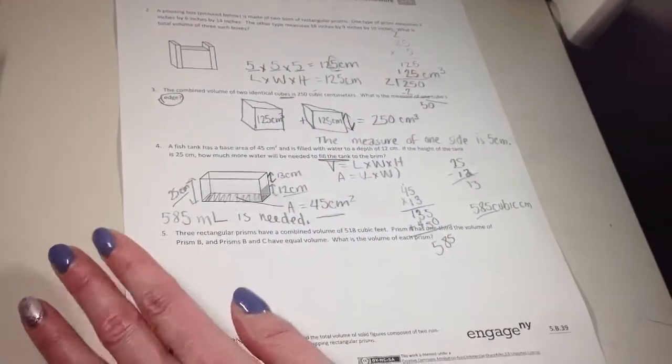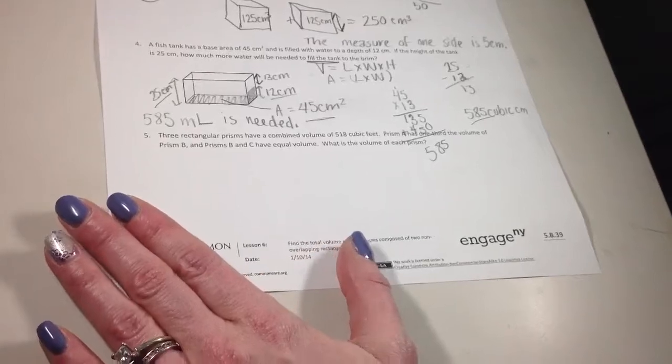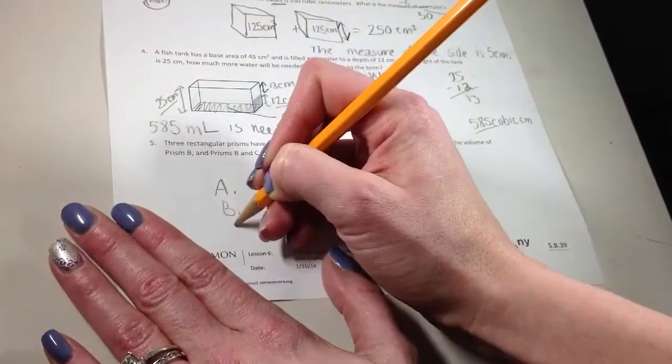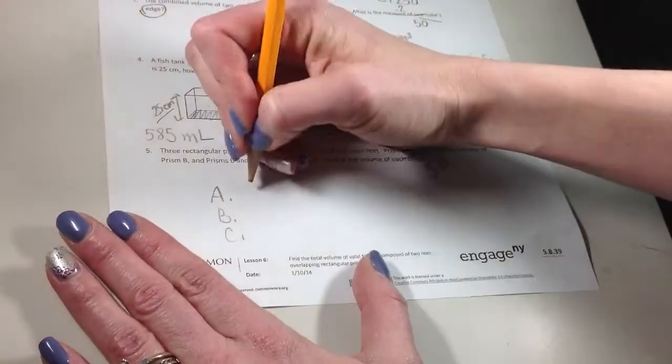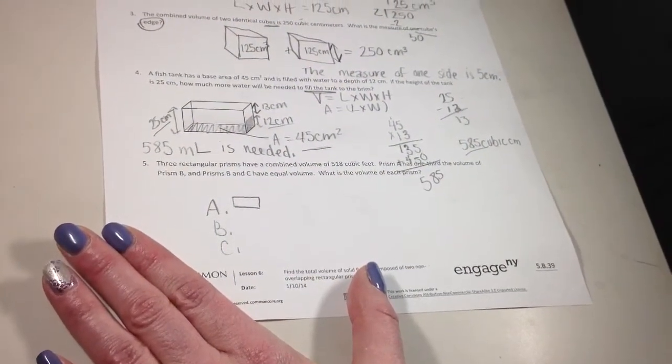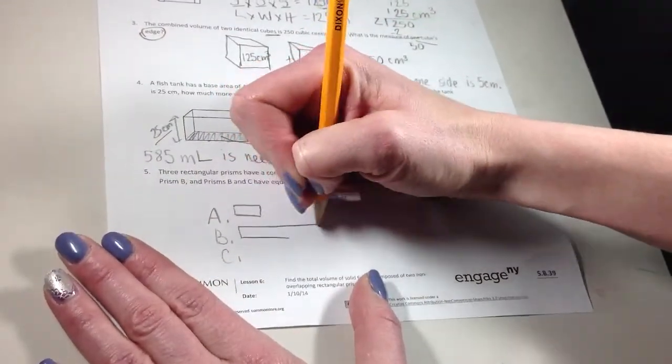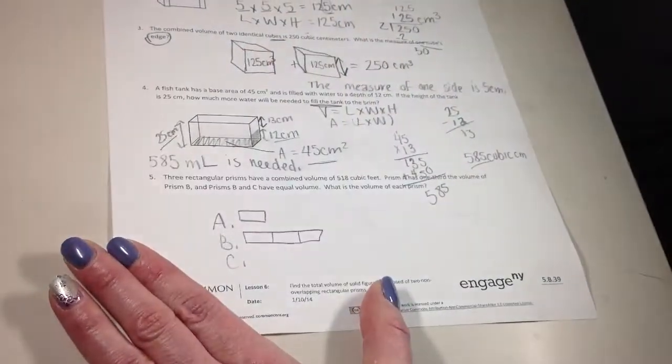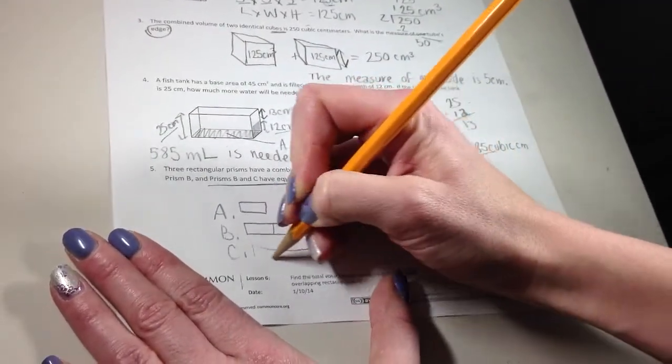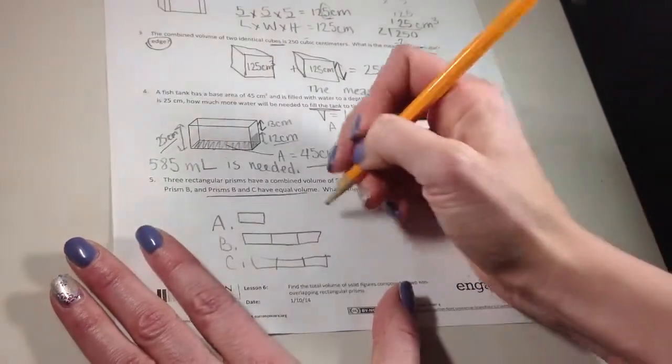Okay, last one. They talk about three rectangular prisms. They have a combined volume of 518 cubic feet. Prism A has one-third the volume of prism B. And prism B and C have the same. When I talk about one-third, I talk about one piece out of three. So prism B is one-third, or prism A is one-third of B. So B would be the full three pieces. And A is just one-third of that. And then it says B and C have equal volumes. So there's C.